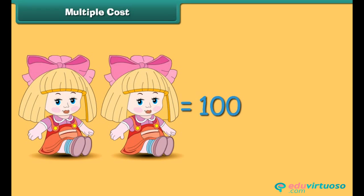The multiple cost of two dolls is equal to rupees 100 multiplied by 2. So the multiple cost of the dolls is rupees 200. Multiple cost is the cost of more than one unit and is calculated as unit cost multiplied by the number of items.